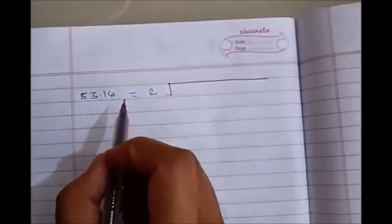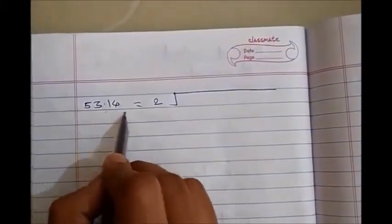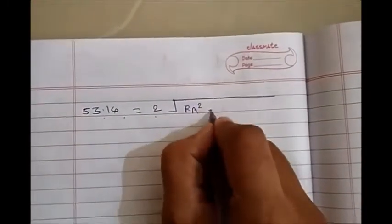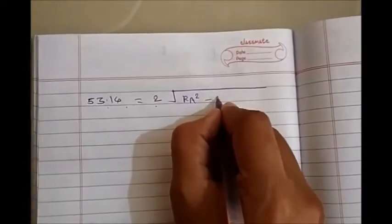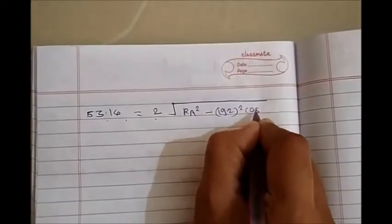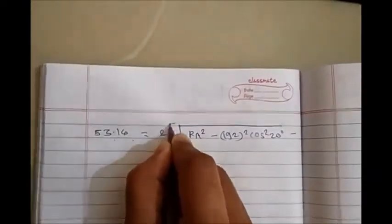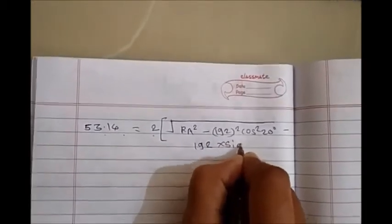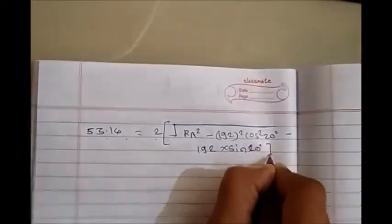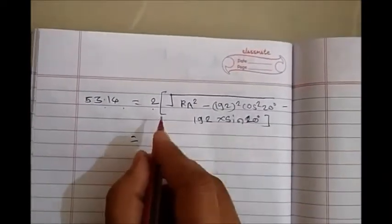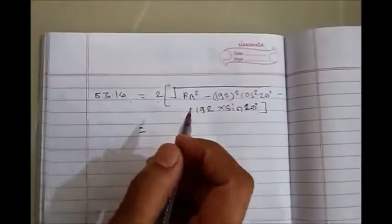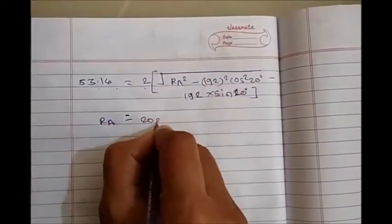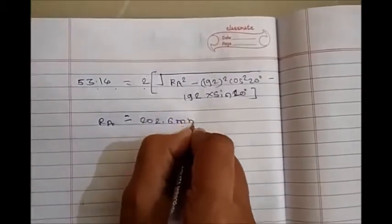We know that path of contact equals 53.14 equals 2 into bracket square root of Ra squared minus 192 squared cos squared 20 degrees minus 192 times sin 20 degrees. After doing this calculation, we get Ra equals 202.6 mm.